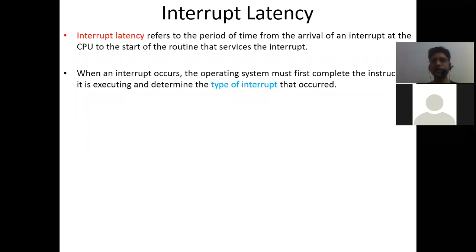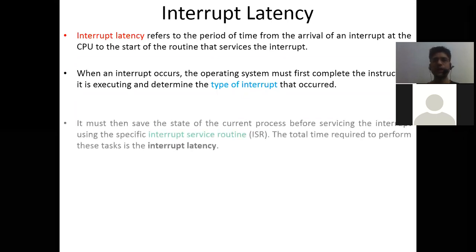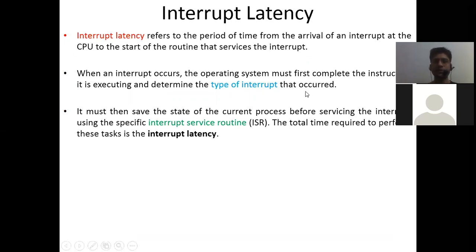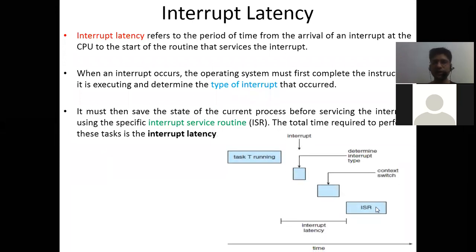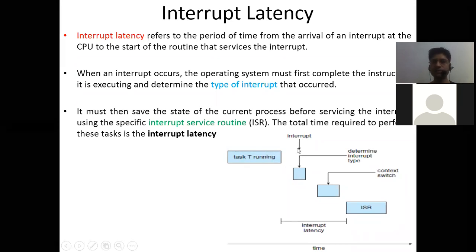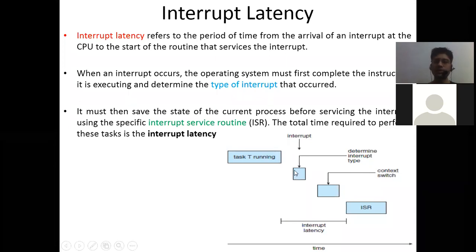When an interrupt occurs, the operating system must first complete the instruction it is executing and determine the type of interrupt — whether it is a software interrupt or a hardware interrupt. It must then save the state of the current process before servicing the interrupt using the Interrupt Service Routine (ISR). The total time required to perform these tasks is the interrupt latency.